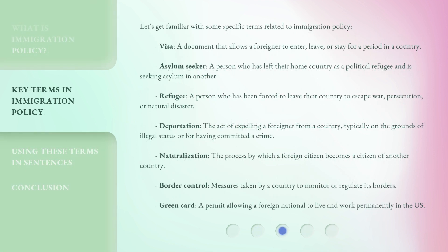Let's get familiar with some specific terms related to immigration policy. Visa: a document that allows a foreigner to enter, leave, or stay for a period in a country. Asylum seeker: a person who has left their home country as a political refugee and is seeking asylum in another. Refugee: a person who has been forced to leave their country to escape war, persecution, or natural disaster.